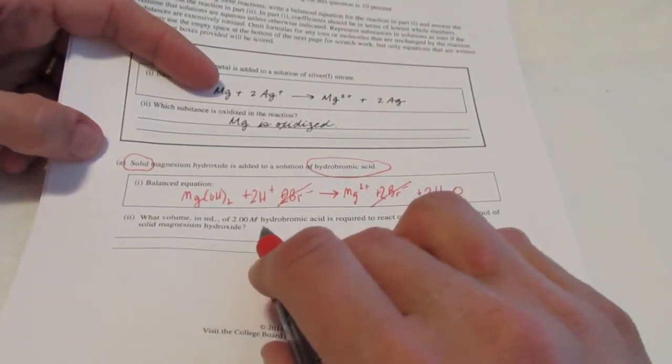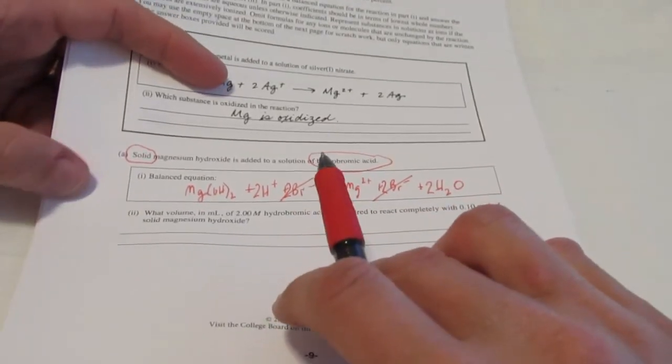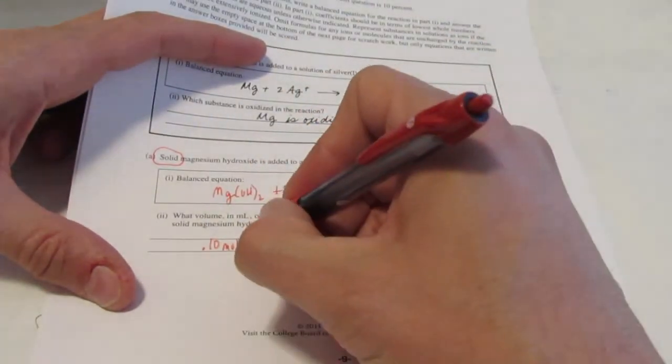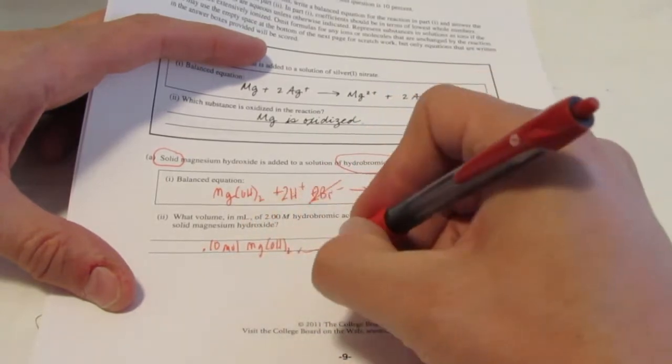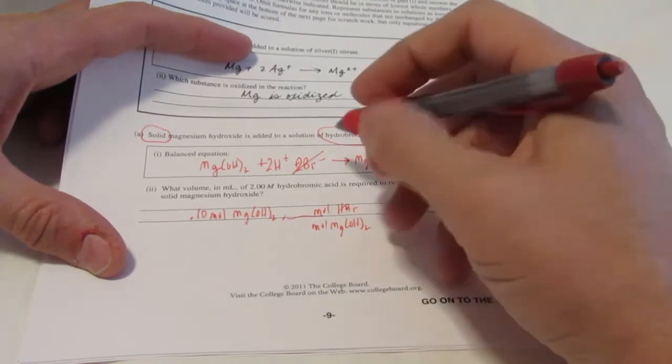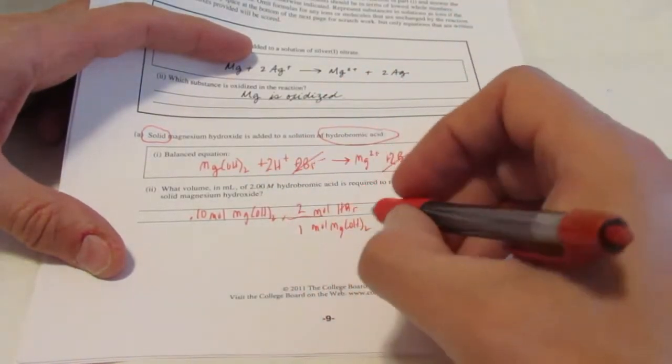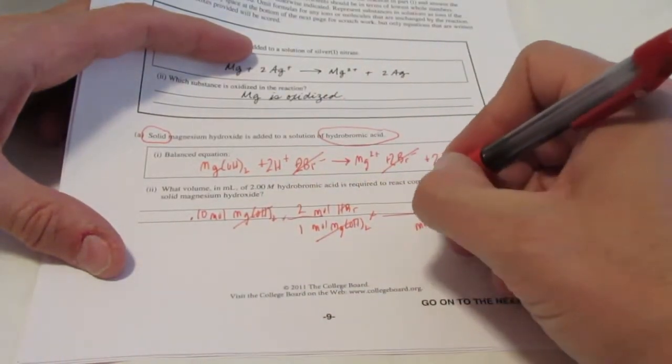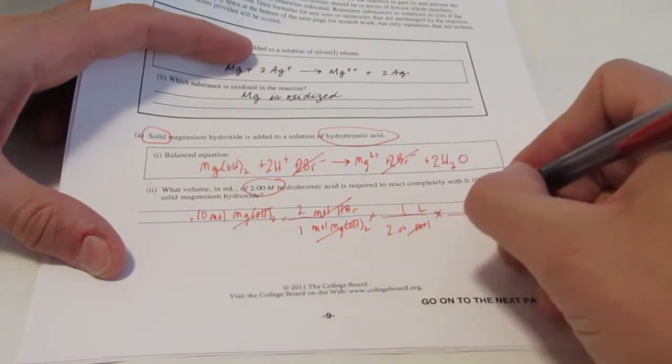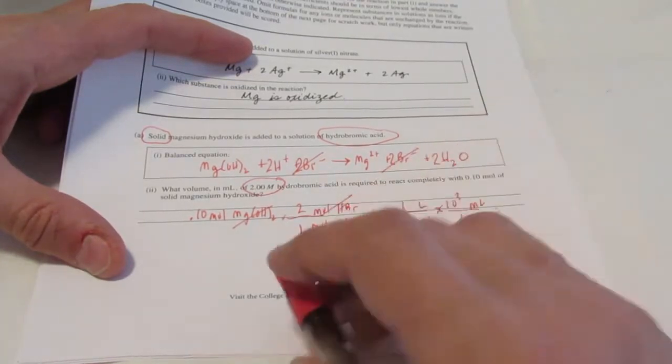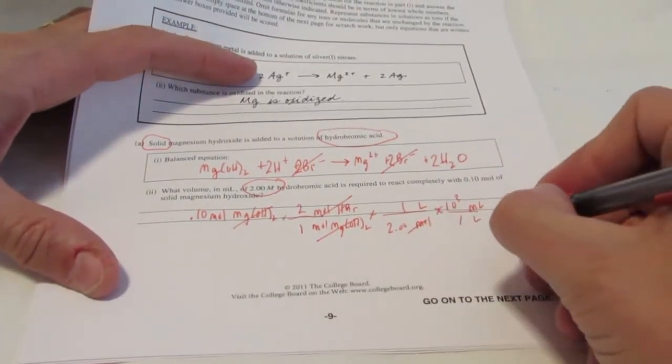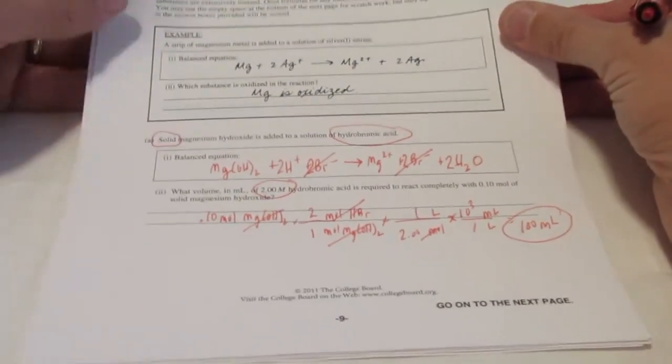So it then says what volume in mLs of two molar hydrobromic acid is required to react with 0.1 moles of solid magnesium hydroxide? So let's see. We have 0.10 moles of magnesium hydroxide, Mg(OH)2. We're going to go from moles of what we know. Some simple, quick stoichiometry. You do not need a calculator here, nor are you allowed one. To moles of HBr. Now let's see. The mole ratio is one to two. So two HBr's for every one magnesium hydroxide. And then we need to go from moles to liters. Now the molarity of my hydrobromic acid is two moles per liter. So my answer is going to be in liters. It does want milliliters, so we'll add one more step here. We'll go from liters to mLs. So 0.1 times two is 0.2, divided by two is 0.1, times a thousand is one hundred milliliters. And you're done. You should be able to handle that easily without a calculator.